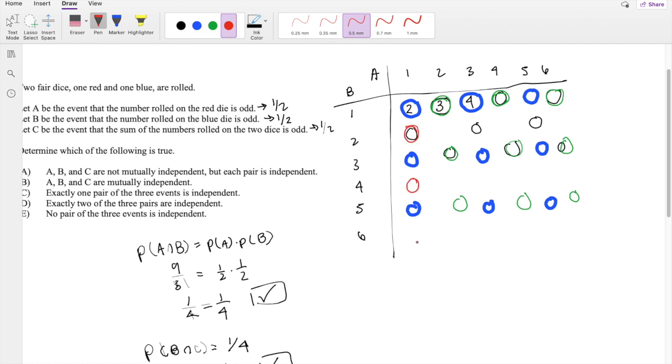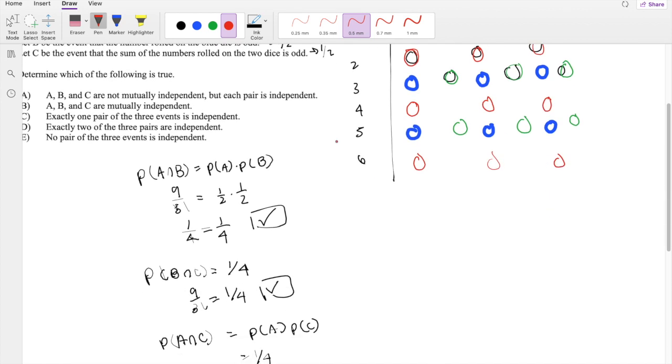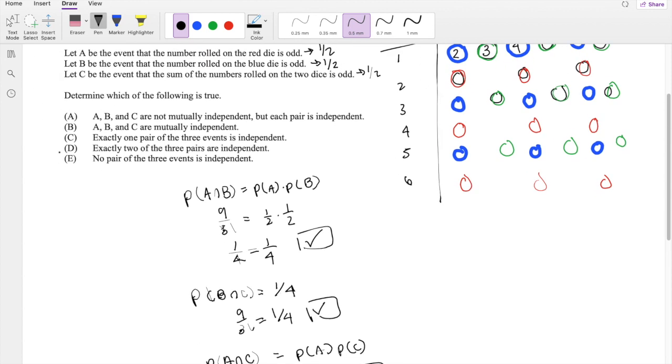So we know that exactly these are still 9 over 36. So we know these are all independent. So exactly all the pairs are independent.